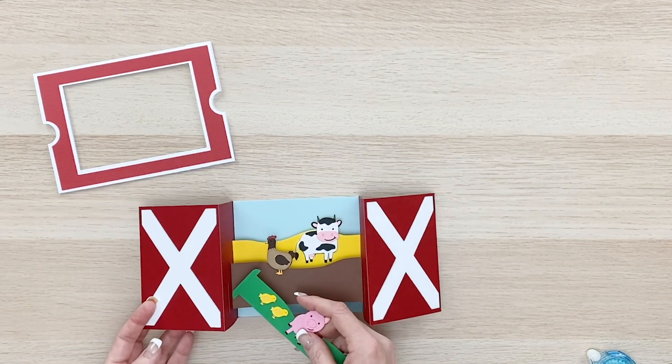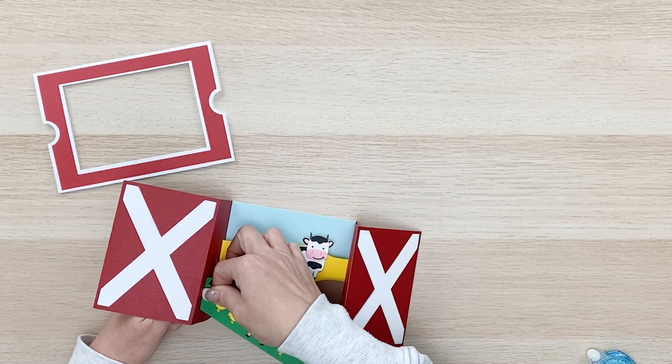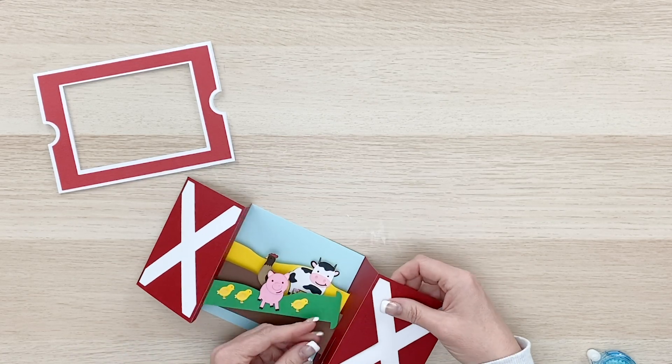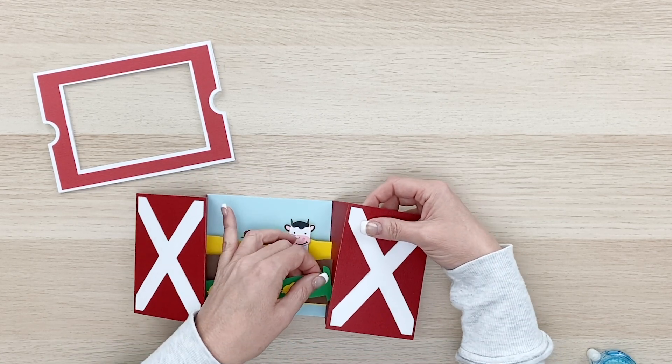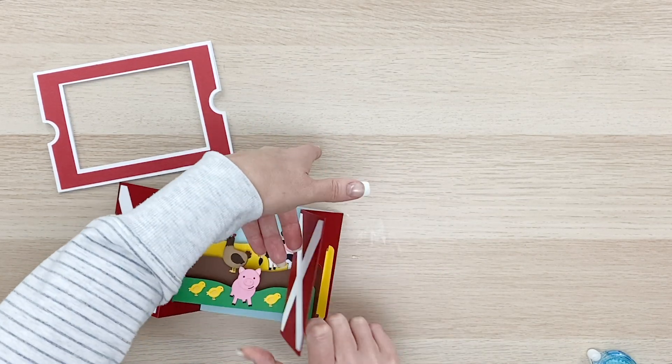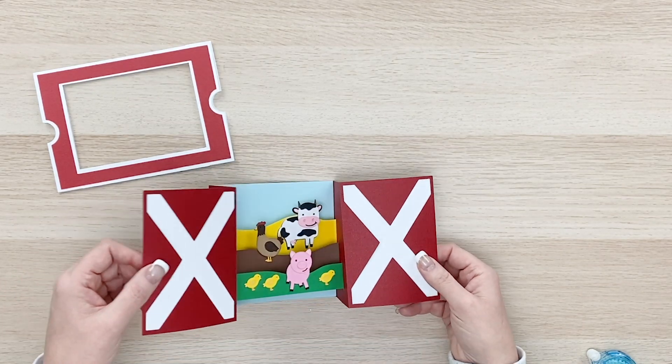So that works out great. So then we'll put our little chicken in. And then our little piggy. With the chickies. And this one's going to feel a little tighter because it just doesn't have as much wiggle room up and down. But it'll go in. Okay. So there's our little sliders in place.